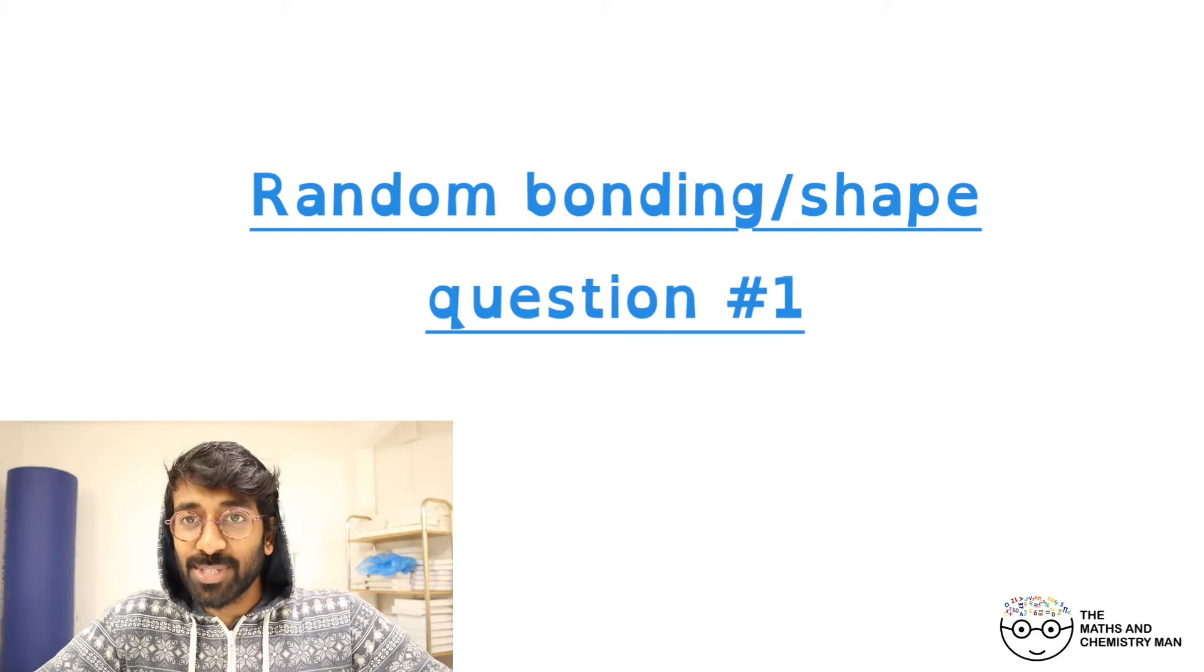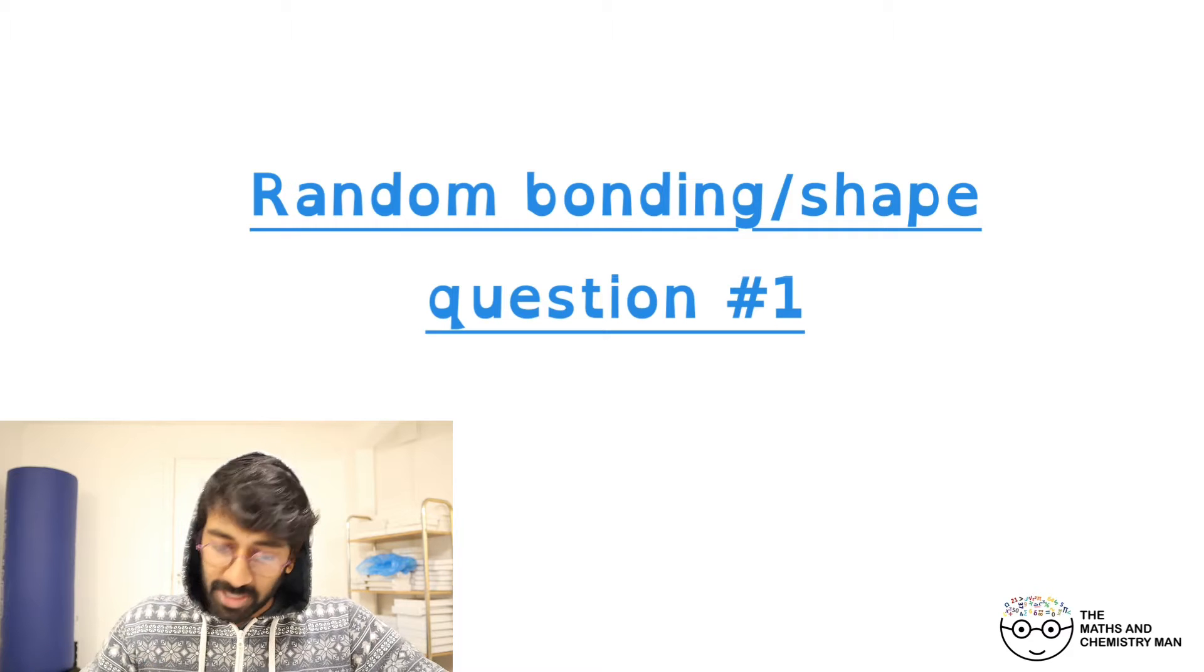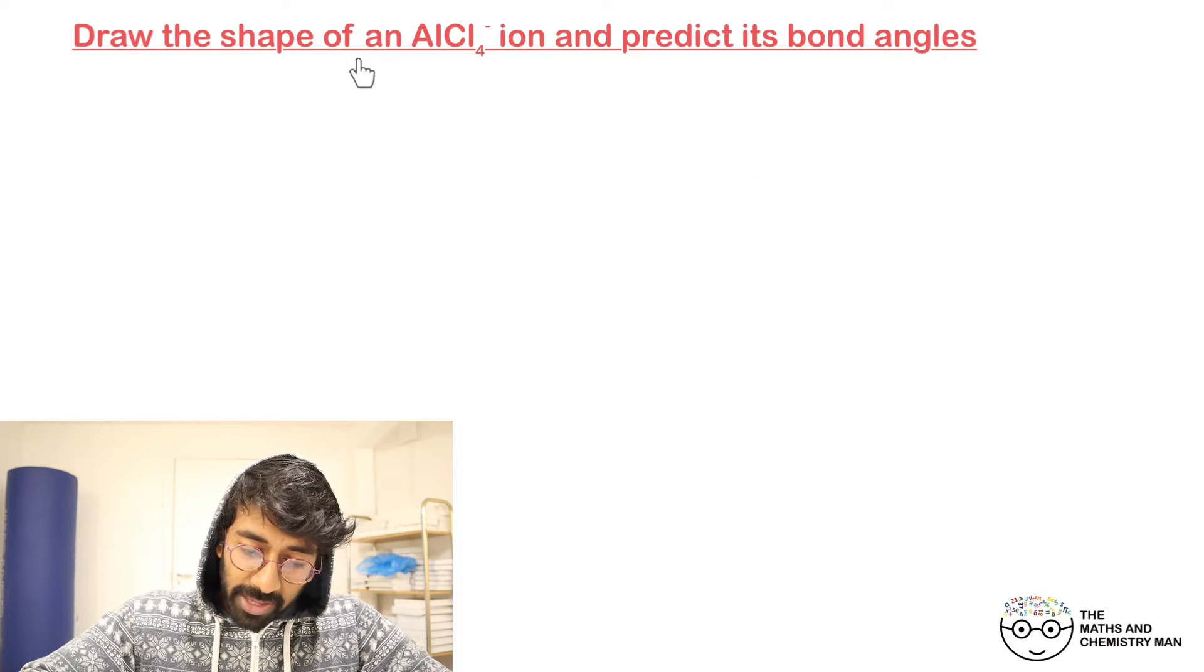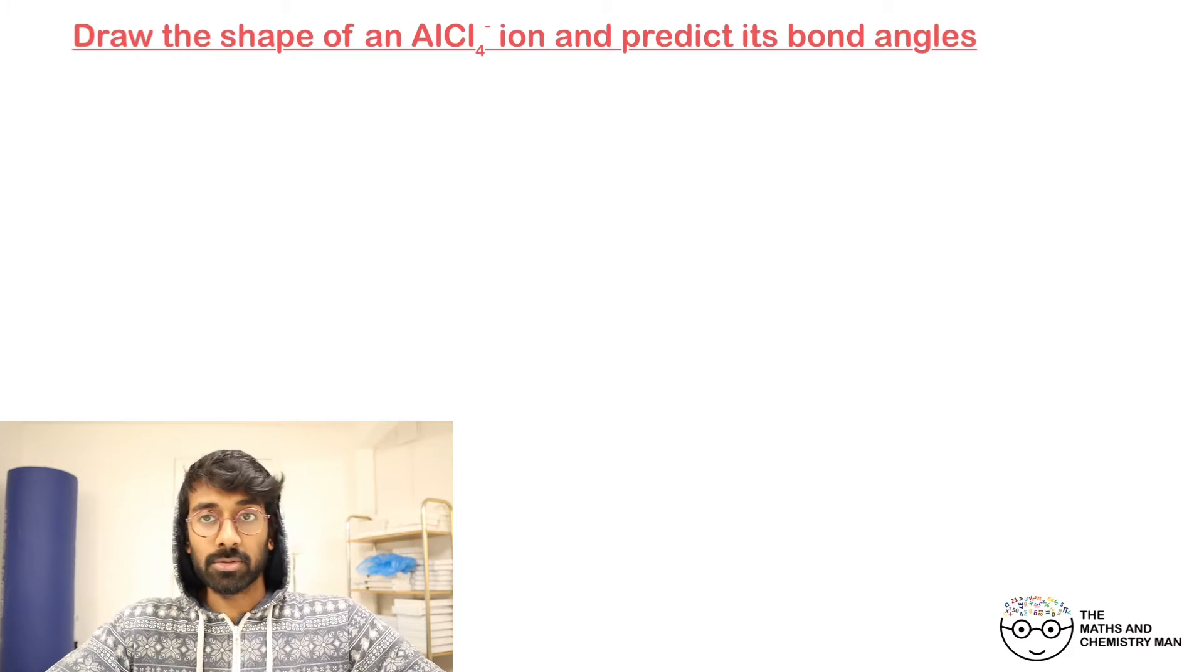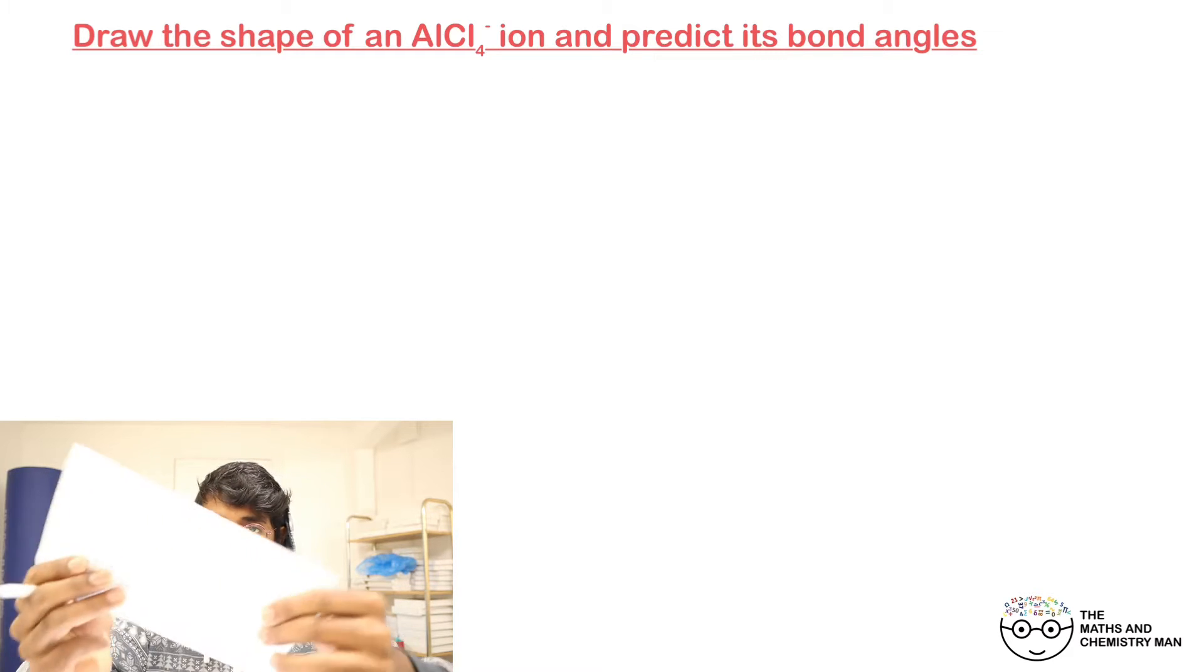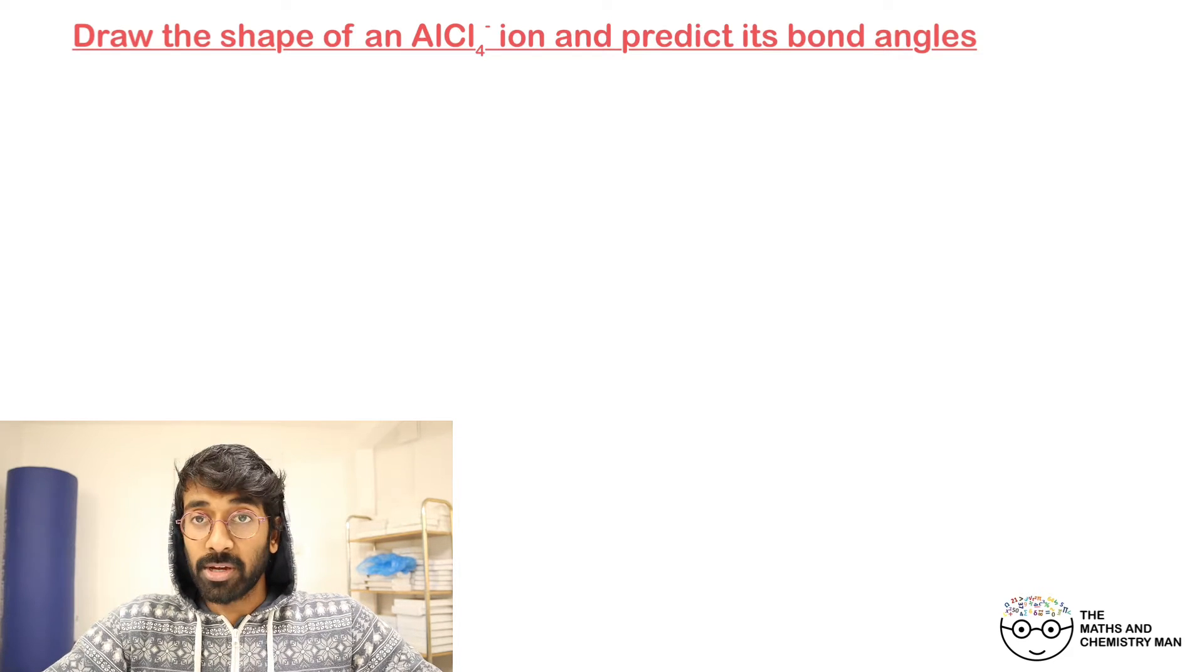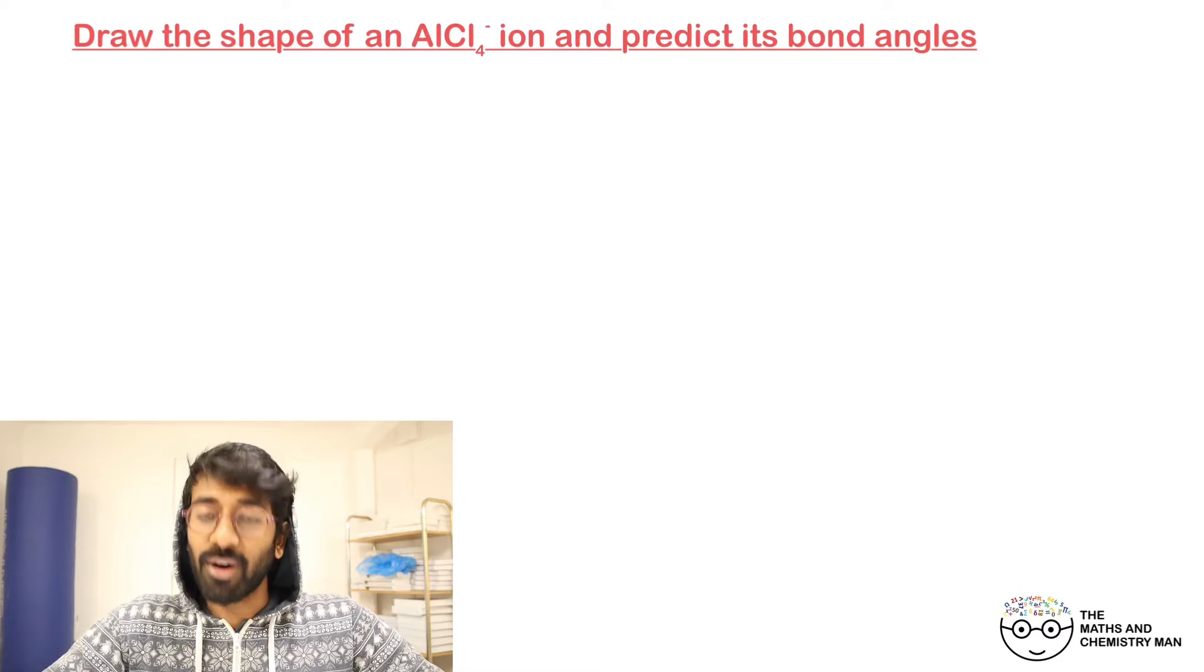Okay, time to do some chemistry. We've got a bonding and shape question here. We have to draw the shape of AlCl₄⁻ ion and predict its bond angles. A periodic table may be handy, so grab one of these. Have a quick draw, see what you can get, and then we'll go through the answers in a couple of seconds.